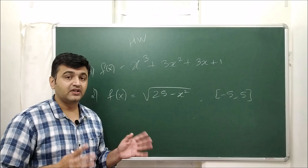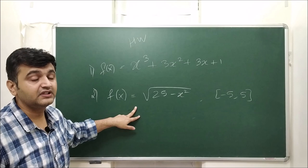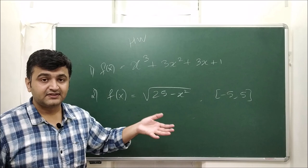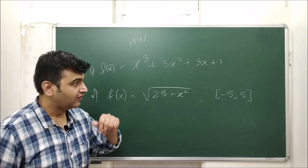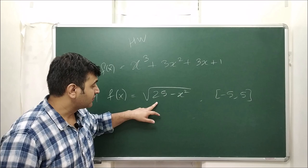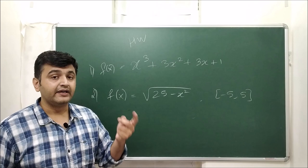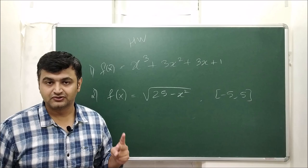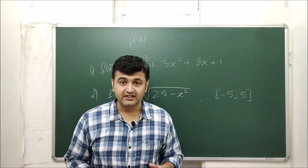Here are the homework problems: for these two functions, find the critical points, find the intervals where the function is increasing and decreasing, and determine at which critical points you have local maxima or local minima. For the first function no domain is given so take minus infinity to infinity; for the second function the domain is minus 5 to 5. If you have any doubts, ask in the comment section, and don't forget to like, share, and subscribe.